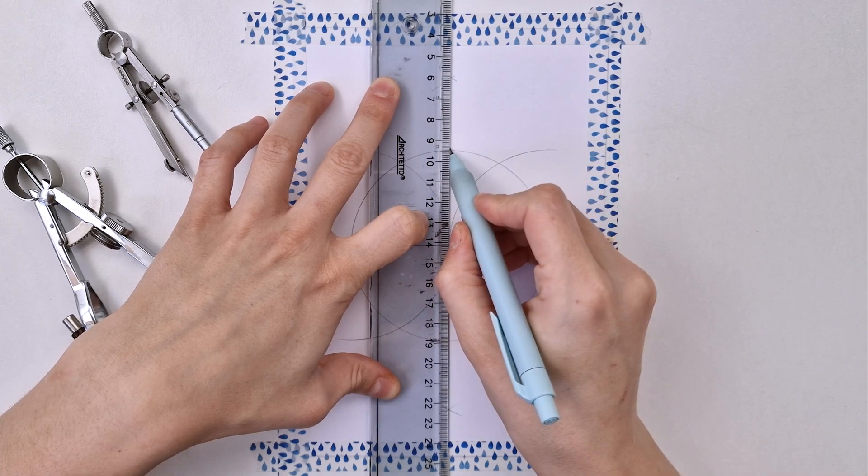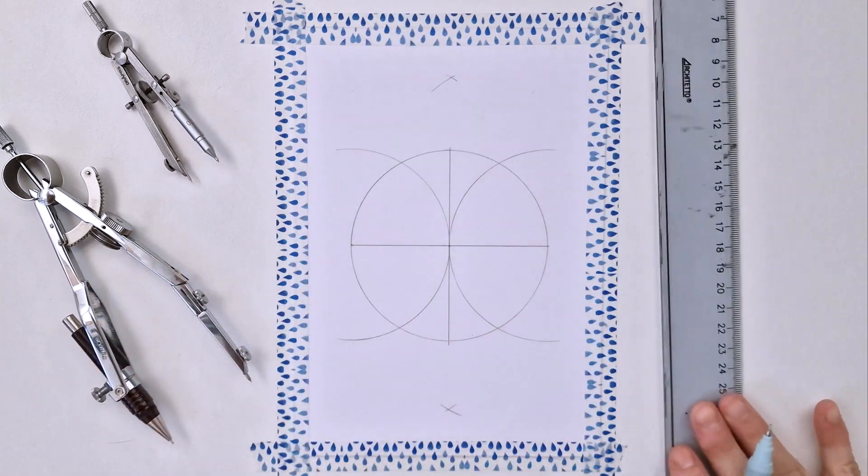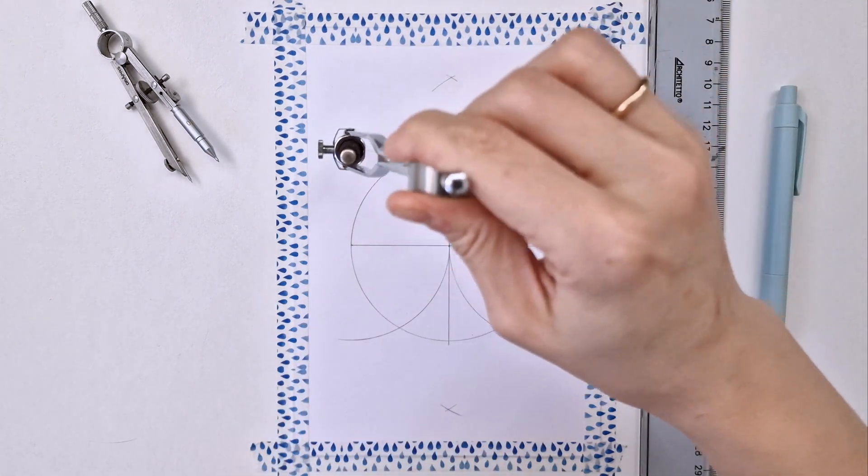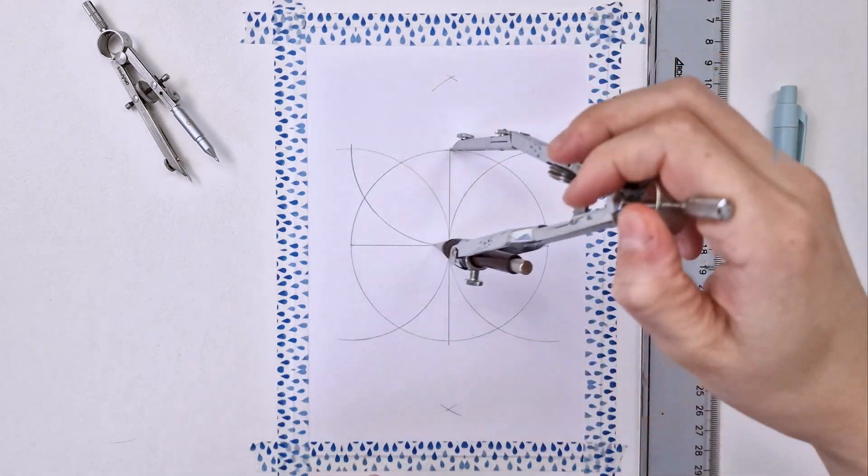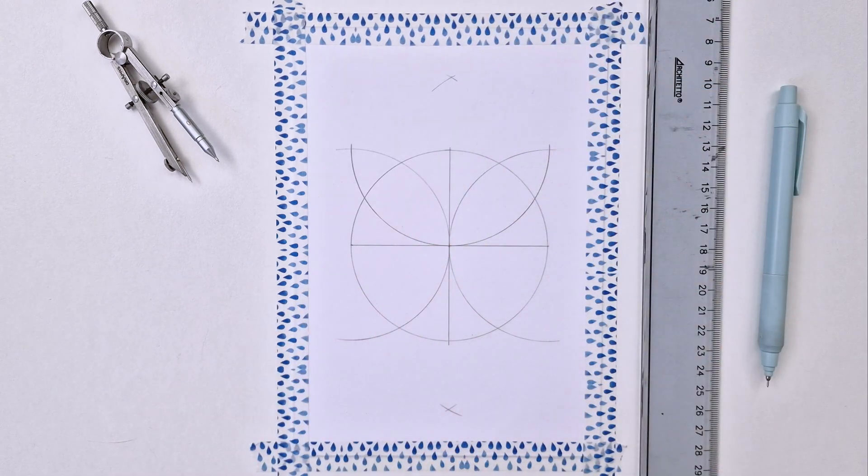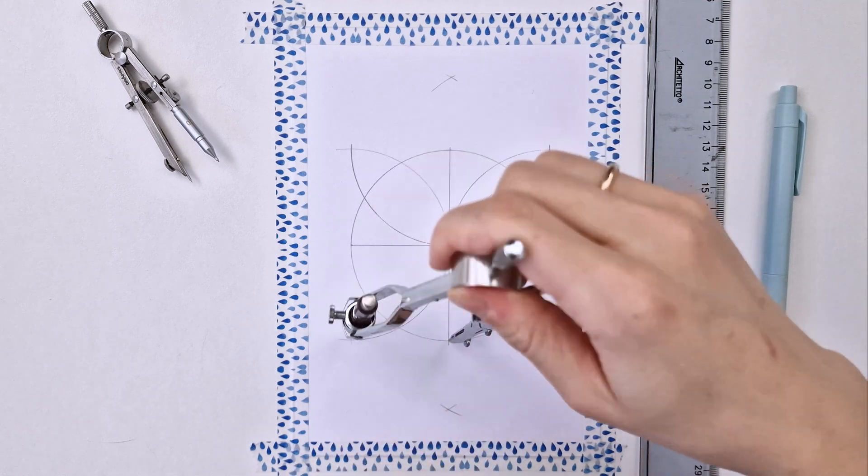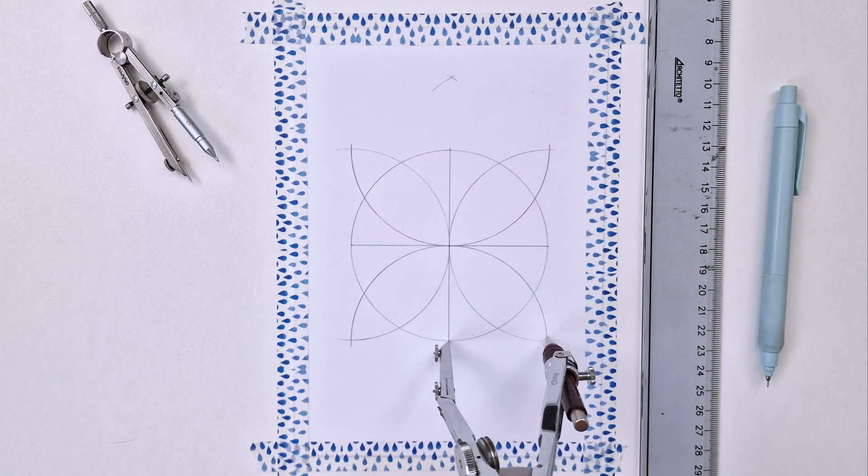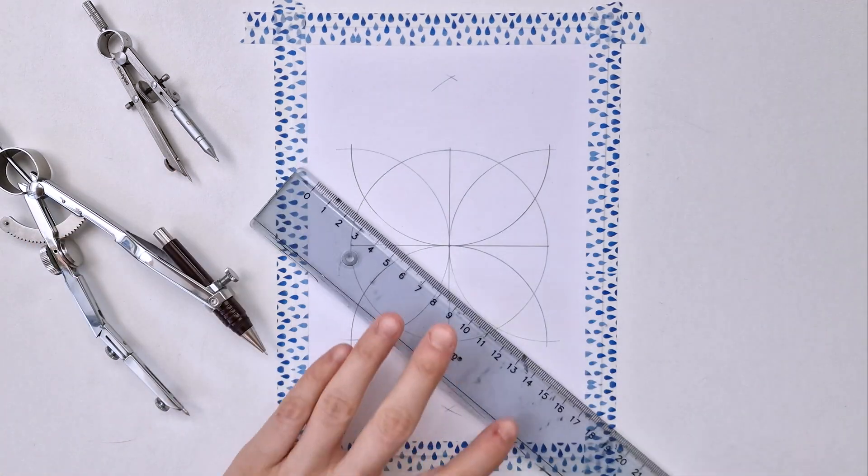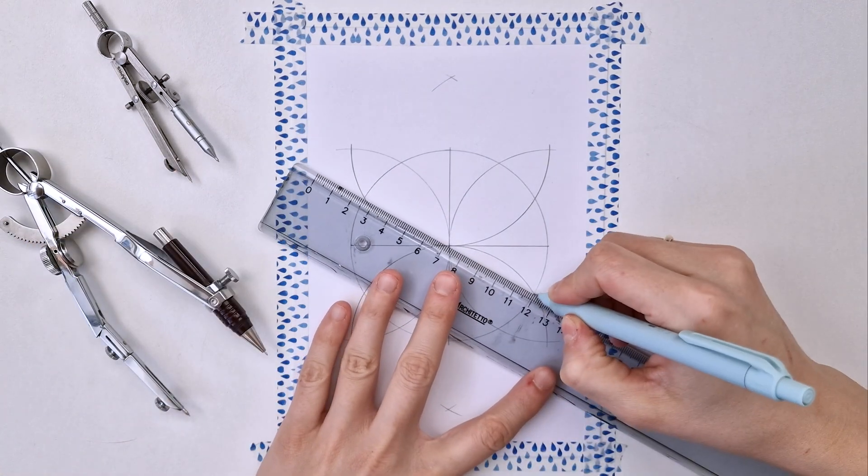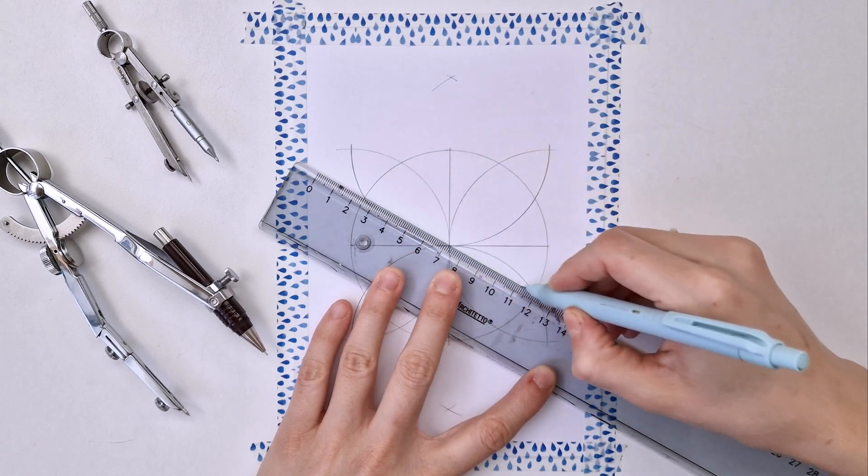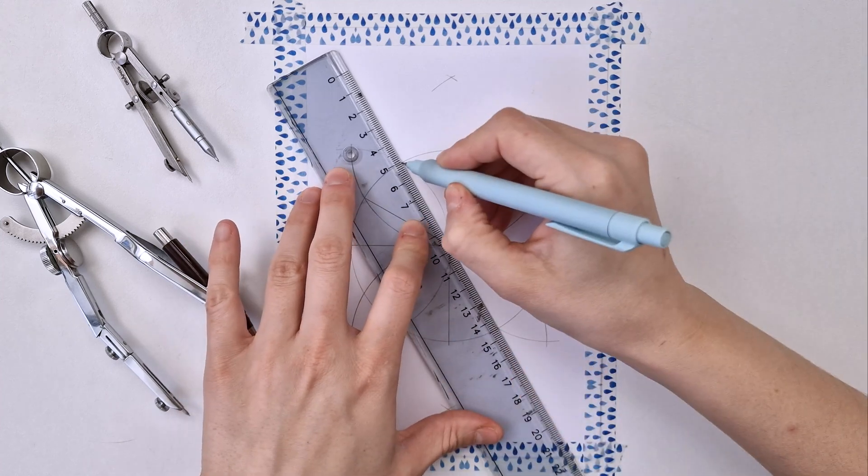Now that I have the intersection between the vertical line and the circle, I'm using the initial radius, pointing my compass and drawing another two semicircles which intersect the first two. Now I'm aligning my ruler to opposite points of intersections between the semicircles and the circle.